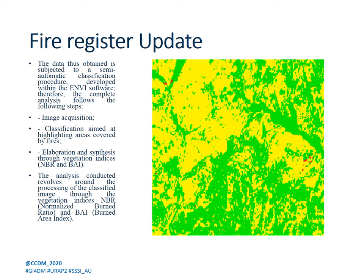The complete analysis follows these steps: image acquisition, classification aimed at highlighting areas covered by fires, and elaboration and synthesis through vegetation indices — specifically NBR (Normalised Burned Ratio) and BAI (Burned Area Index). The analysis revolves around the processing of the classified image through these two vegetation indices.